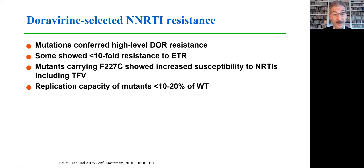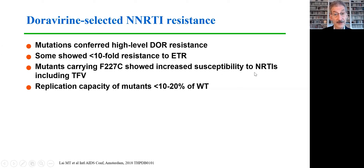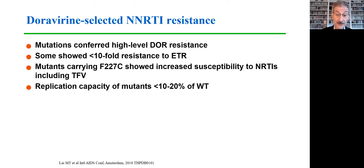In looking at doravirine-selected NNRTI resistance, there are mutations that confer high-level doravirine resistance, but some of those mutations showed only 10-fold or less resistance to etravirine. Mutations carrying the 227C mutation — one of the key resistance mutations for doravirine — also demonstrated increased susceptibility to the nucleoside RT inhibitors, including sensitization to tenofovir, another example of mutational interaction as seen with Y181C for nevirapine. The replication capacity of doravirine resistance mutants was generally quite poor, less than 10–20% of that of wild type.